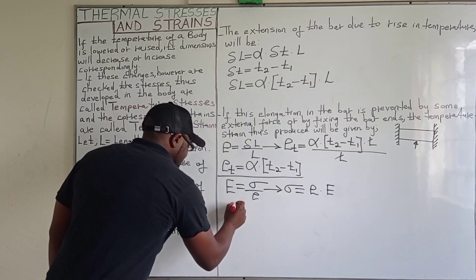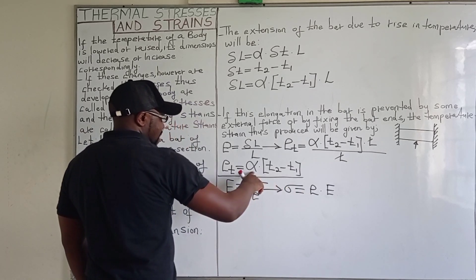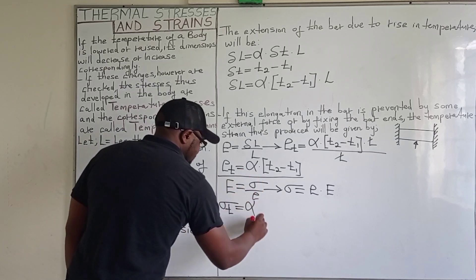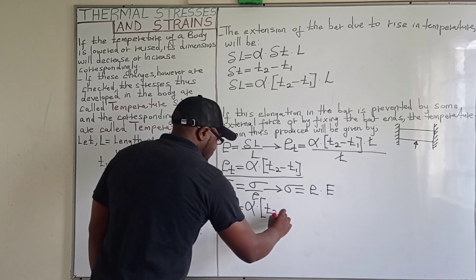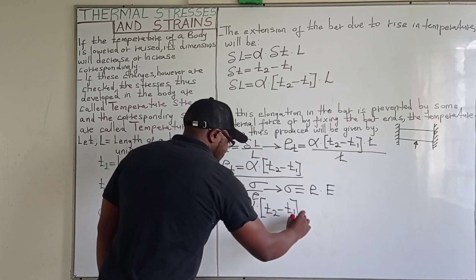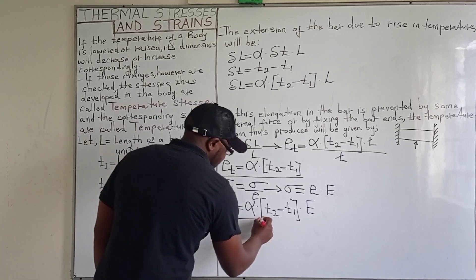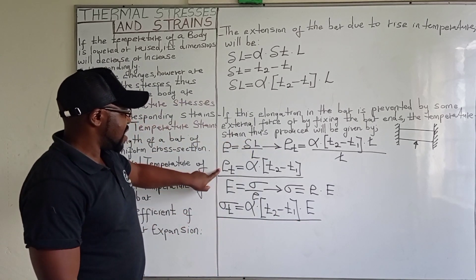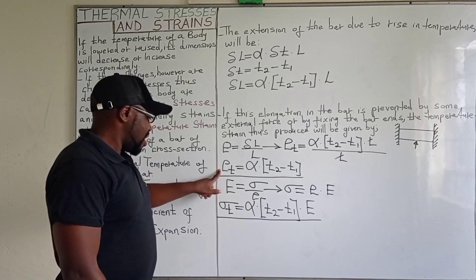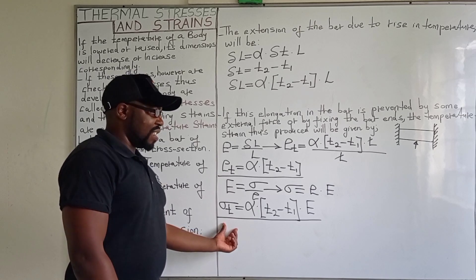Therefore, the temperature stress produced will be equal to the temperature strain — which in this case is the coefficient of linear expansion times the change in temperature — multiplied by the Young's modulus of elasticity. Therefore, this is the formula for getting the temperature stress.